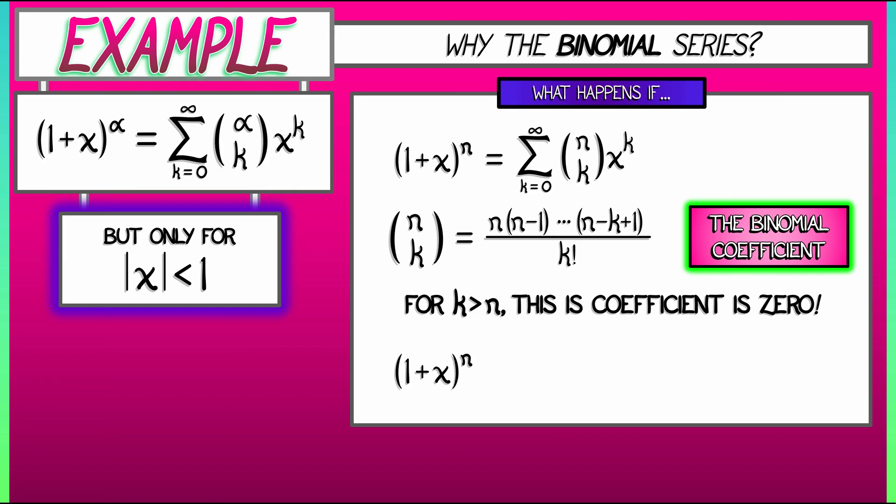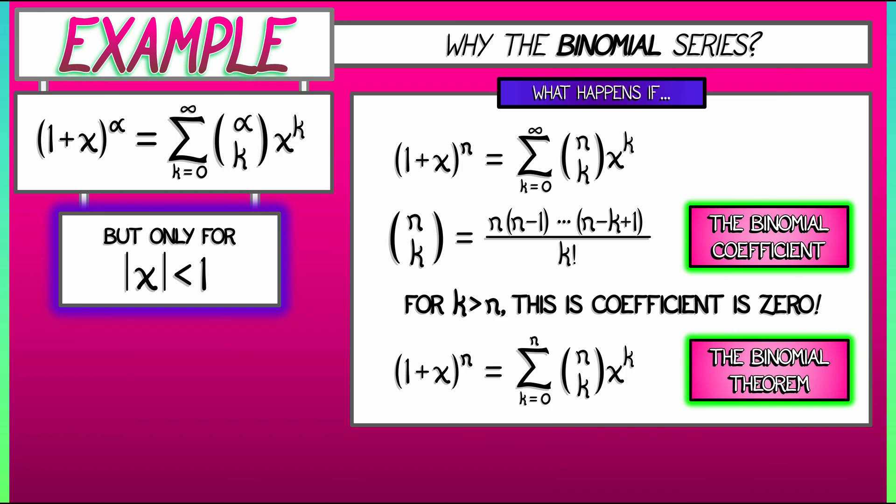Quantity 1 plus x to the n is really the sum k goes from 0 to n of n choose k times x to the k. And you might recognize that in terms of the classical binomial theorem.